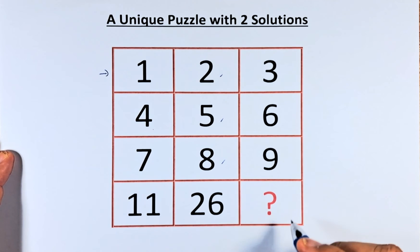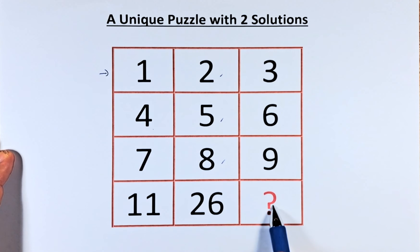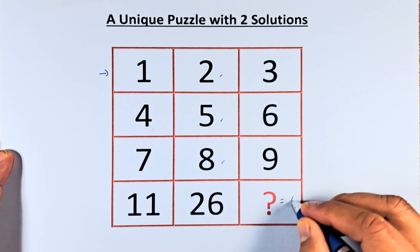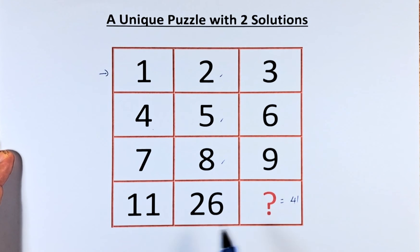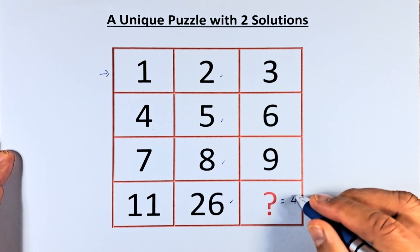So the first answer for the question mark: 11 plus the number, and then that total divided by 2 will give you 26. So the first number is going to be 41. 11 plus 41 is 52, 52 divided by 2 is 26. So the first solution is 41.